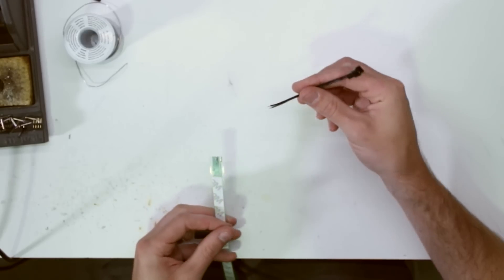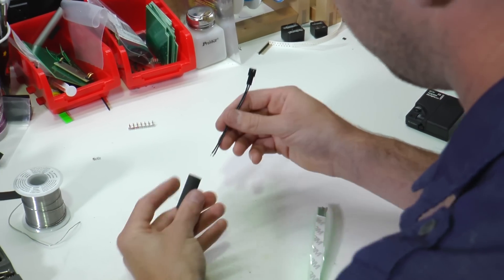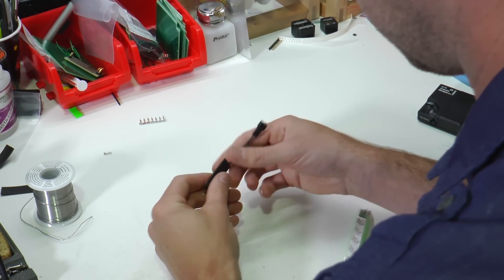Before you solder your easy snap connector to the tape, make sure you put the heat shrink tubing on it.